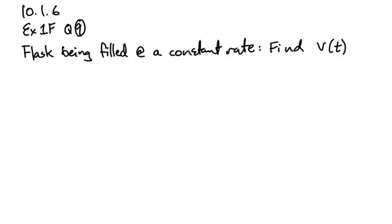All right, it's a bit noisy around here, but we've got to get the work done while we can. This is 10.1.6, exercise 1F question 9. A flask being filled with water at a constant rate, four different bits. And what we have to do is find an equation for the volume at time t. That's what v of t means there, find the volume in terms of the variable t.